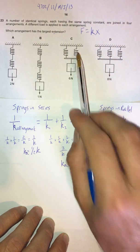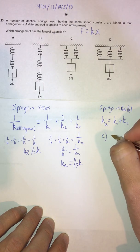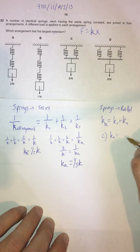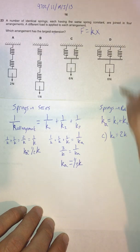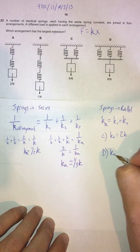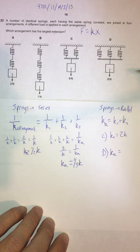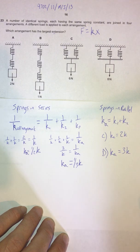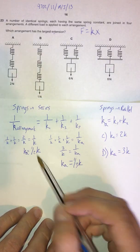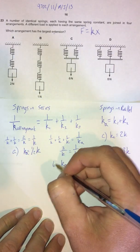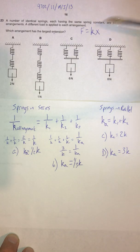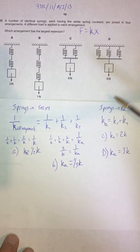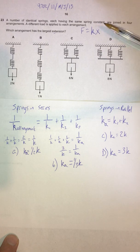For choice C — two springs in parallel — the arrangement spring constant is k + k = 2k. For choice D — three springs in parallel — the arrangement spring constant is k + k + k = 3k. So now we know the effective spring constants for all four arrangements.